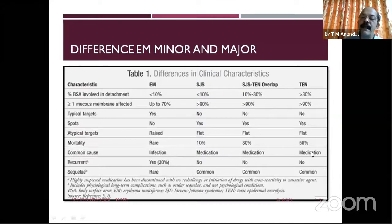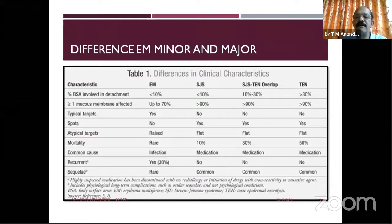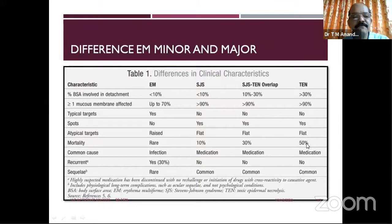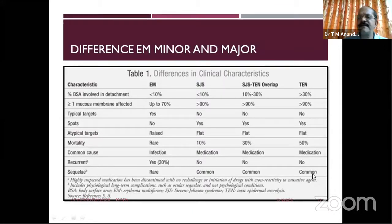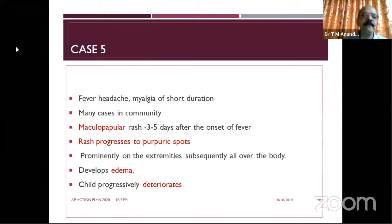Mortality varies: rare in erythema multiforme minor, but up to 50% in TEN. An important complication to keep in mind is eye involvement — vision may be impaired. In addition to ocular complications, dehydration and infections are important. In the next case, a child with fever, headache, and myalgia — during an epidemic in the community — developed maculopapular rash progressing to purpuric spots over three to five days, subsequently all over the body, with edema, and the child progressively deteriorated.